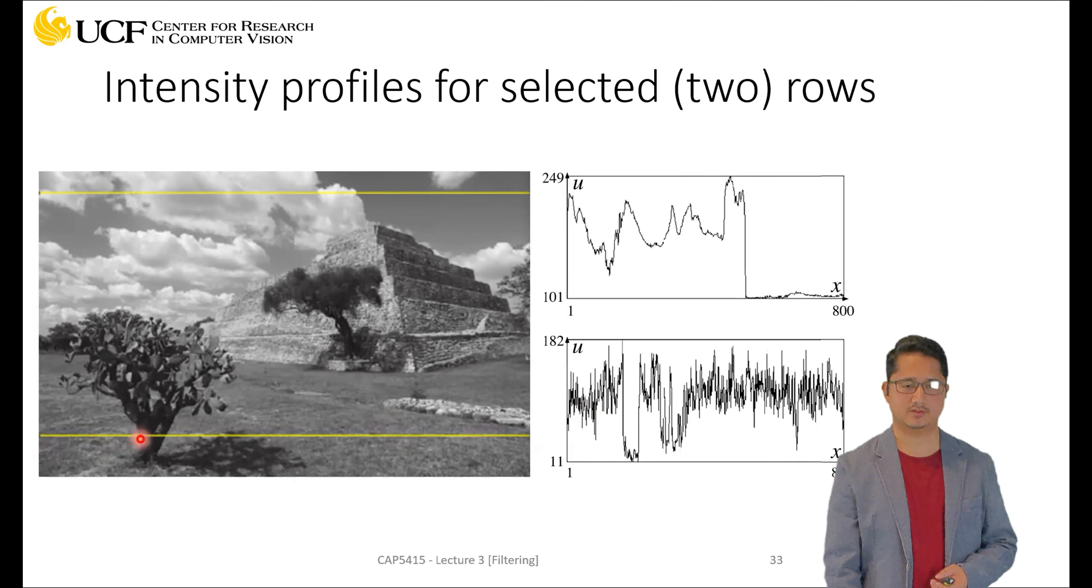Still, it has a pattern because most of these are dark pixels. You can see that when we have this tree trunk, it's actually darker, so it's a huge dip here. But overall, you will see it's fluctuating a lot while this one is kind of smooth.